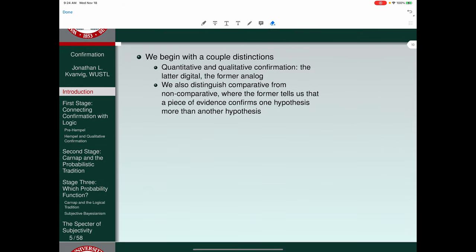We also want to distinguish comparative from non-comparative confirmation. Where the former tells us that a piece of evidence confirms one hypothesis more than another, and the latter tells us that one hypothesis is confirmed. On the former distinction, if we're talking about qualitative confirmation, what we're looking for is something that falls in the three categories of neutral, positive confirmation, negative confirmation. So you've got a piece of information. You get qualitative confirmation judgments when you say that piece of information is neutral with respect to this hypothesis, positively confirming with respect to the hypothesis, negatively disconfirming with respect to the hypothesis. The quantitative measure would have to rely on this as a beginning point, but it becomes much more detailed, much more fine-grained.